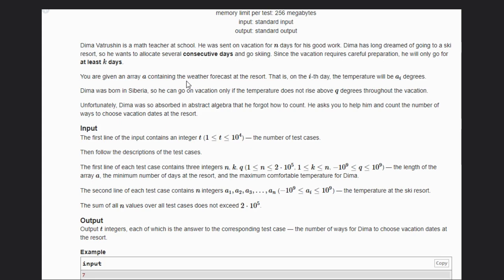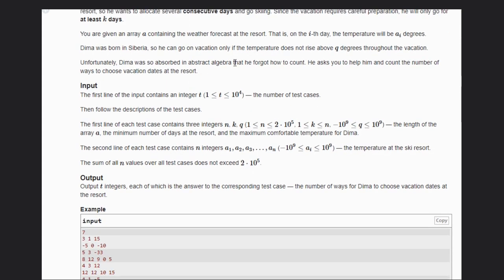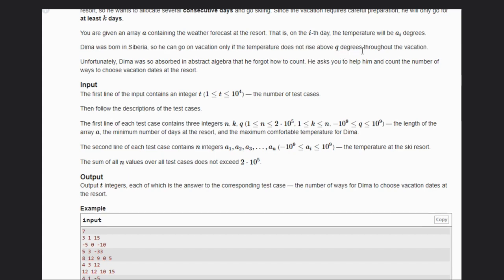We are given an array containing the forecast at the resort. On the ith day the temperature will be AI degrees. Dheema was born in Siberia, so he can go on vacation only if temperature does not rise above Q degrees throughout the vacation.